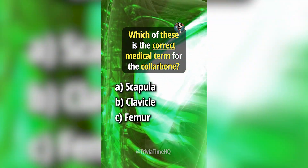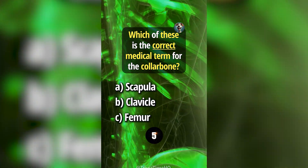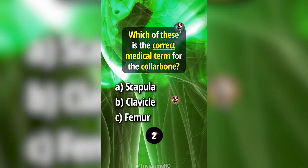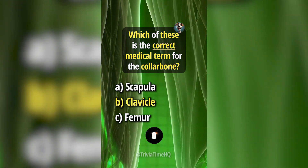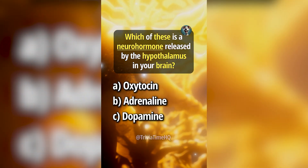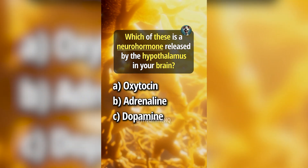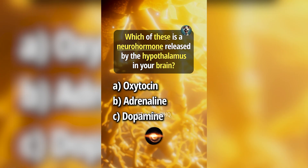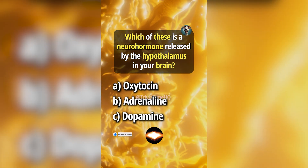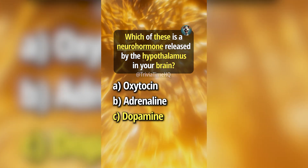Which of these is the correct medical term for the collarbone? Answer B, clavicle. Which of these is a neurohormone released by the hypothalamus in your brain? Answer C, dopamine.